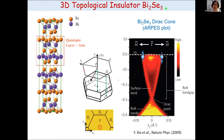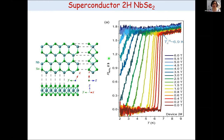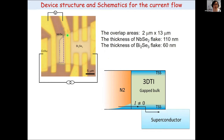In this work we use a 3D topological insulator, bismuth selenide, which is a layered crystal known as a topological insulator with a surface state Dirac point about 270 meV below the bulk gap. The superconductor we employ is also a layered crystal, 2H niobium diselenide, which has a superconducting transition temperature of about seven kelvin. We acquire commercially available bulk crystals of both materials and use mechanical exfoliation to get niobium diselenide and bismuth selenide flakes.